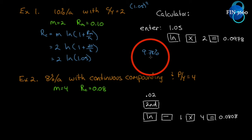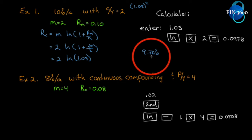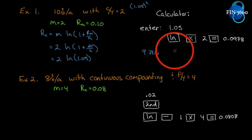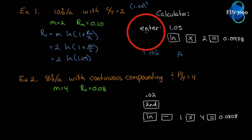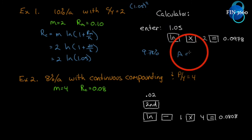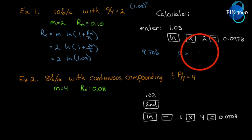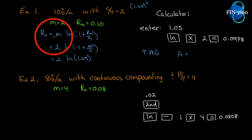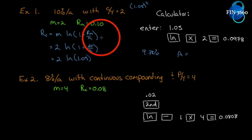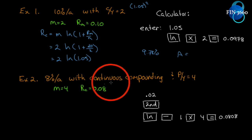So 10% with two compounding periods a year is equivalent to a continuously compounded rate of 9.78%. If we continuously compound a sum at 9.78% for a year, it will equal the same result as compounding that sum at 10% semi-annually. These two will produce the same outcome — we've found the equivalent rates.